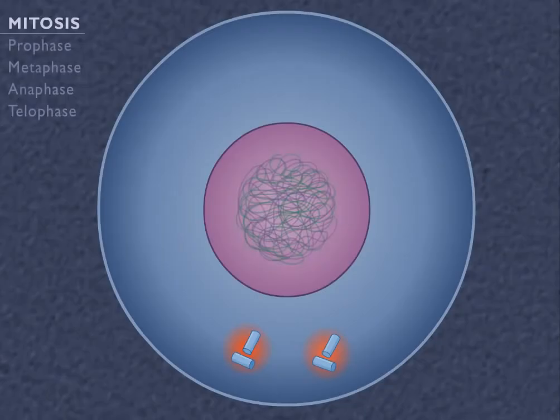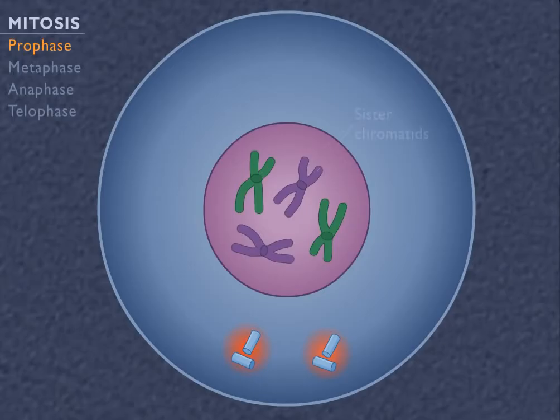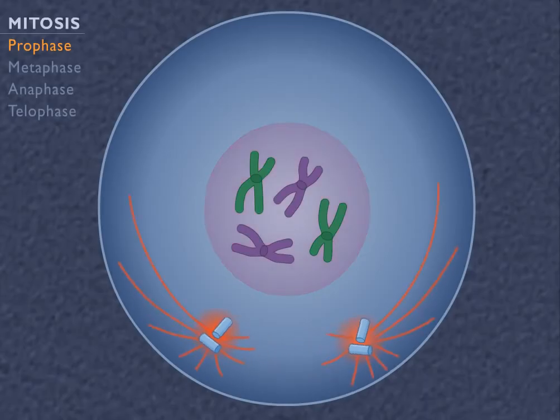During prophase, the chromosomes become visible and condense, becoming shorter and thicker. Each identical copy of a single chromosome is called a sister chromatid. The nuclear envelope breaks down and spindle fibers form as microtubules grow out of the centrioles that move to opposite poles of the cell.